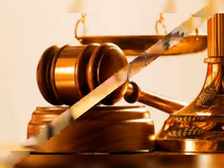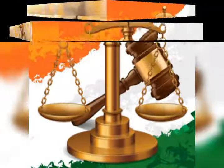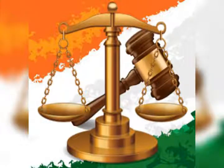Illustration A: The sections in this code which contain definitions of offenses do not express that a child under 7 years of age cannot commit such offenses. But the definitions are to be understood subject to the general exception which provides that nothing shall be an offense which is done by a child under 7 years of age.